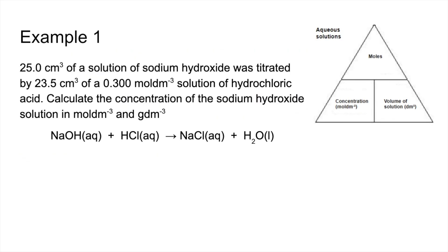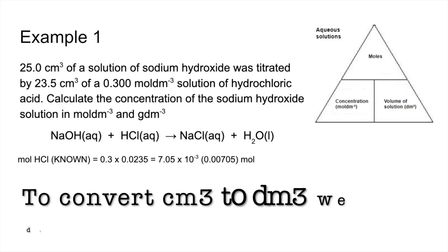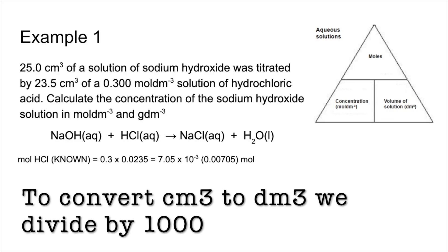So example number one, we've got to calculate the concentration of the sodium hydroxide solution in moles per decimetre cubed and grams per decimetre cubed. So the first thing I'm going to do is calculate the moles of the known chemical. So that's the hydrochloric acid in this case. We've got the concentration and volume for that, so we get 7.05 times 10 to the minus 3.